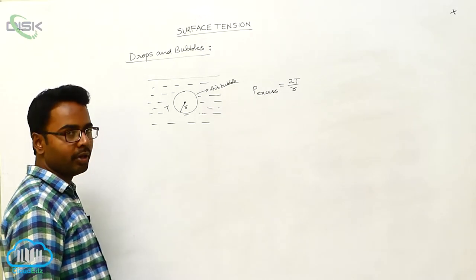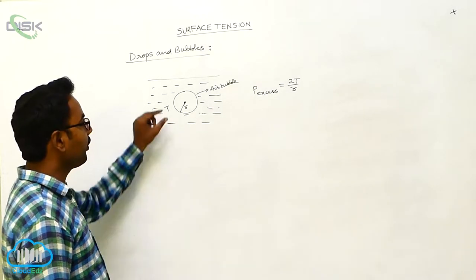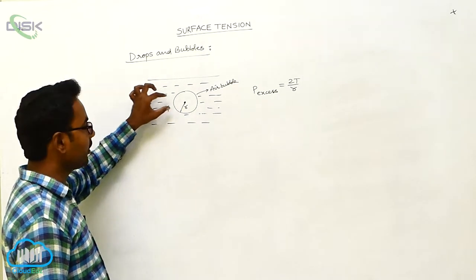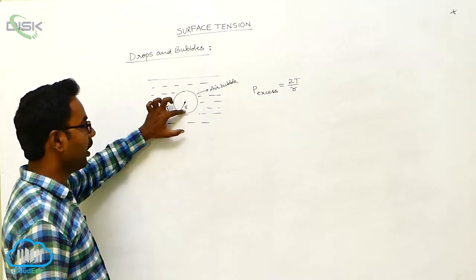Suppose an air bubble is present inside a liquid. This is the liquid of surface density. Inside the liquid, there is an air bubble of radius R.